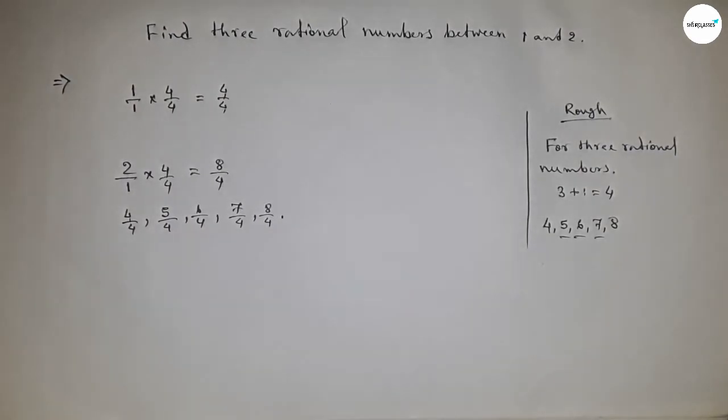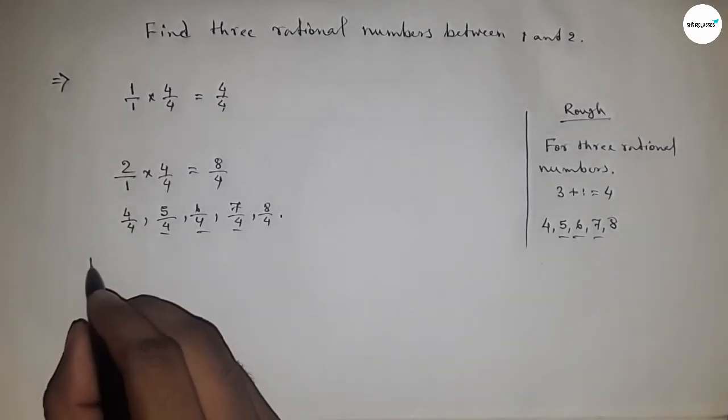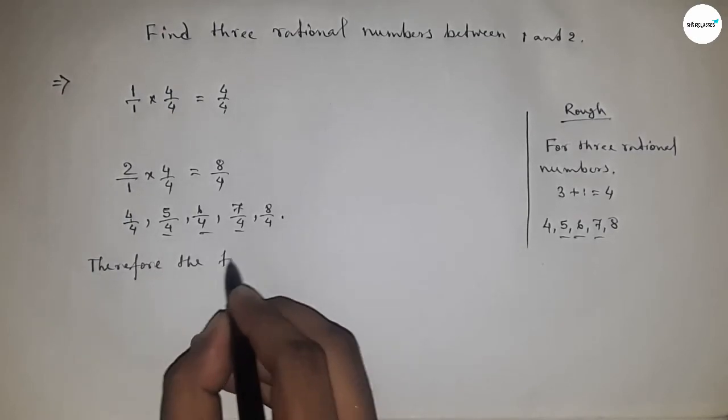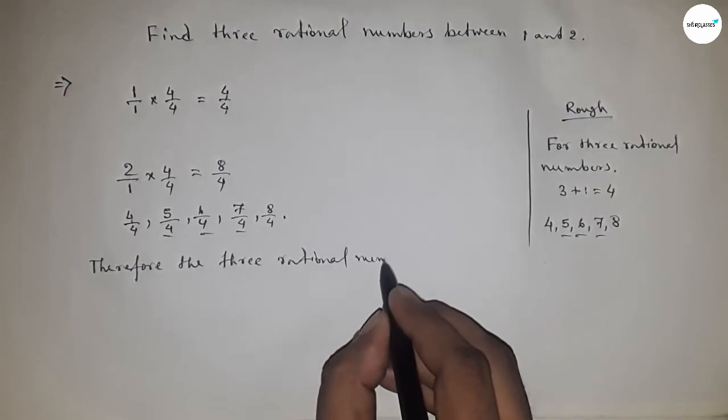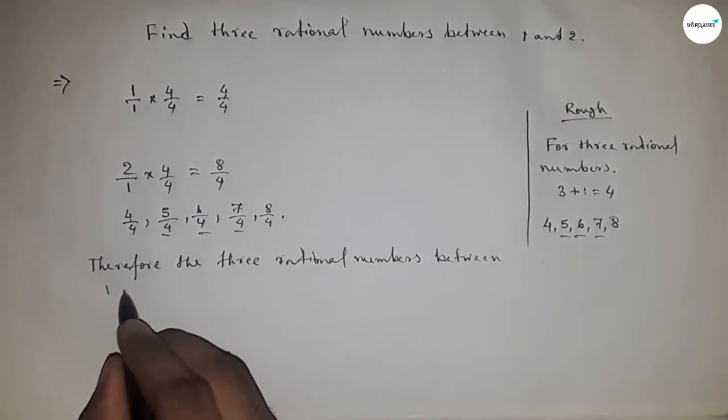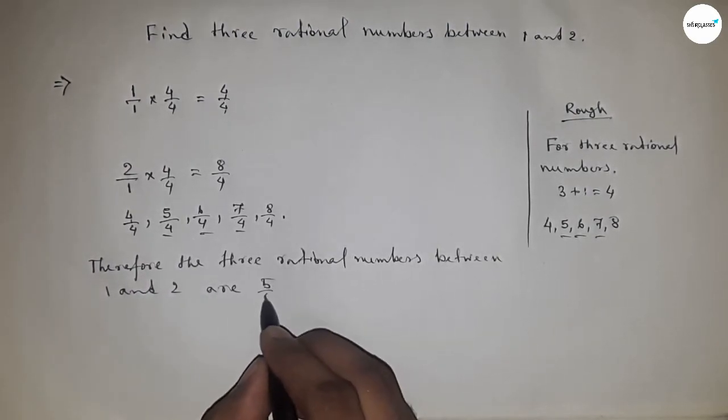7 by 4 and 8 by 4. So these are the three rational numbers. Therefore, the three rational numbers between 1 and 2 are 5 by 4, 6 by 4, and 7 by 4.